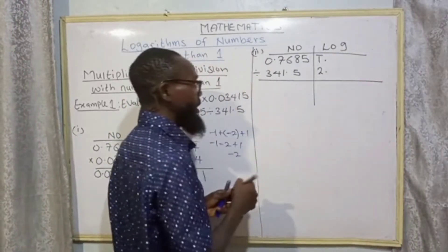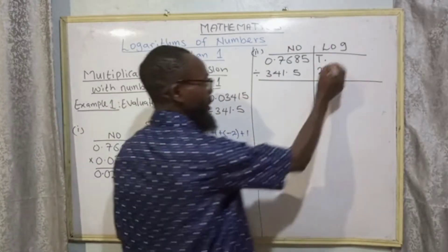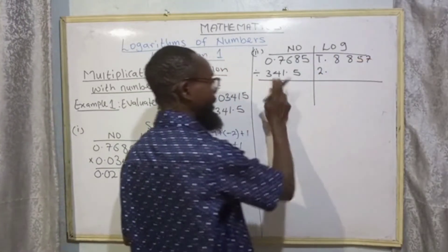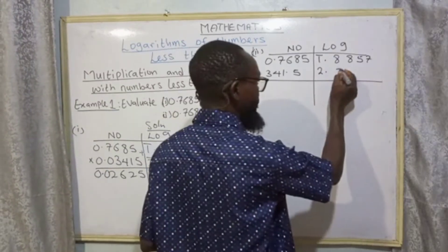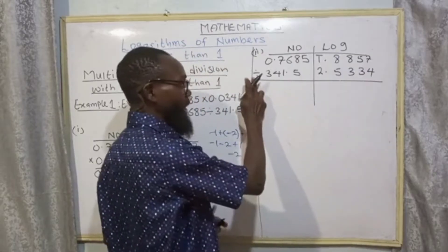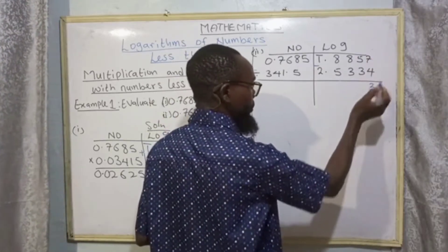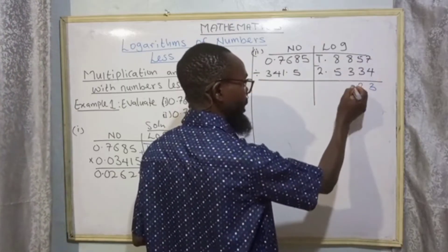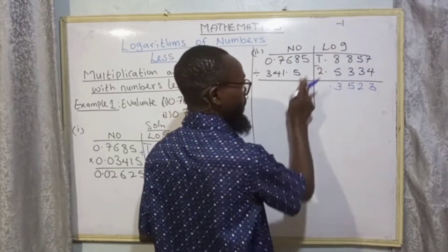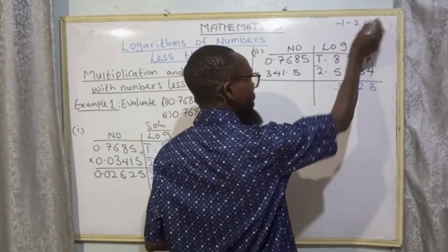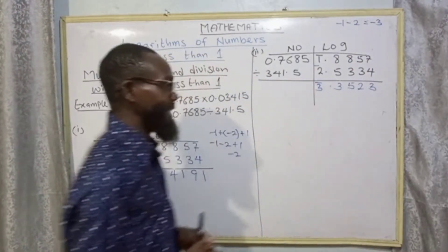We take our logarithm table: 76 under 8 difference 5 gives 8857, and 34 under 1 difference 5 gives 5334. This division changes to subtraction: 7 minus 4 is 3; 5 minus 3 is 2; 8 minus 3 is 5; 8 minus 5 is 3. For the integer: this is division, so minus one minus two gives minus three. We write bar three.